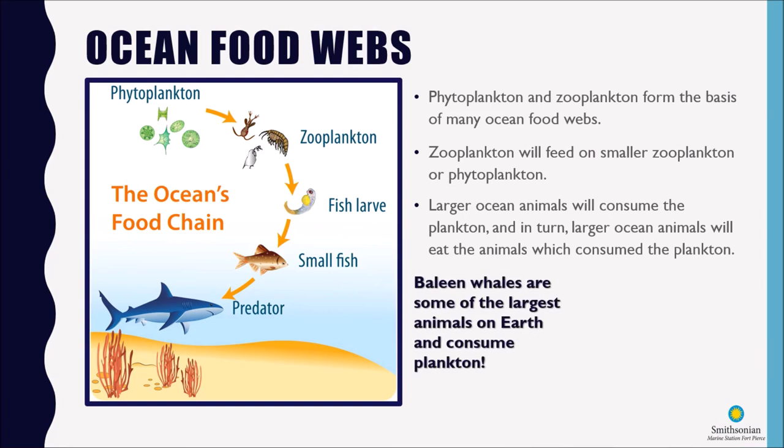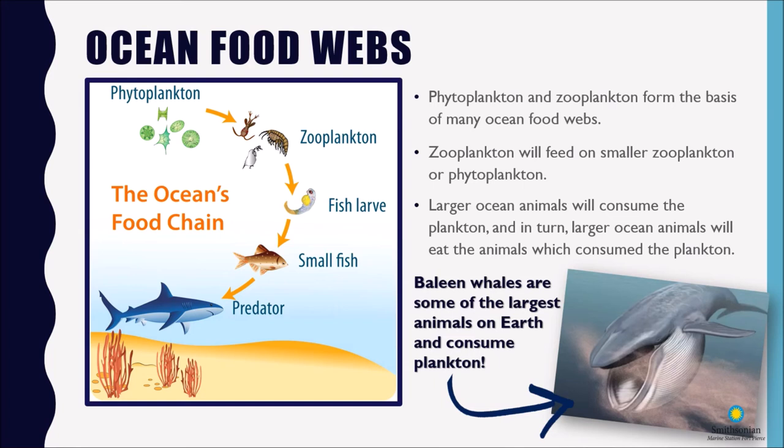So baleen whales are some of the largest animals on earth and they consume plankton. Baleen whales would be whales like humpback whales, blue whales. They have specialized mouth structures in their mouths called baleen that helps them filter plankton out of the water and that's what they eat.